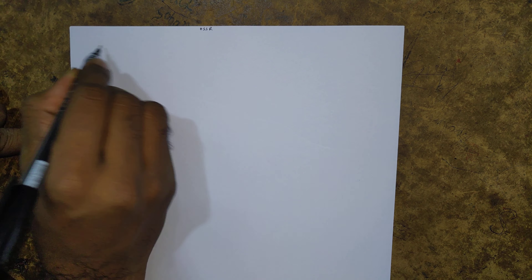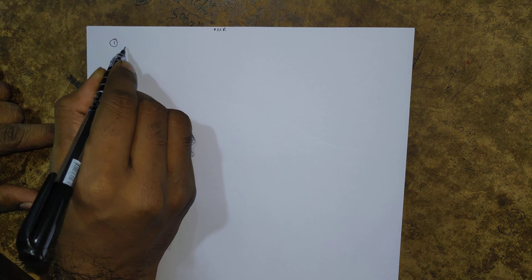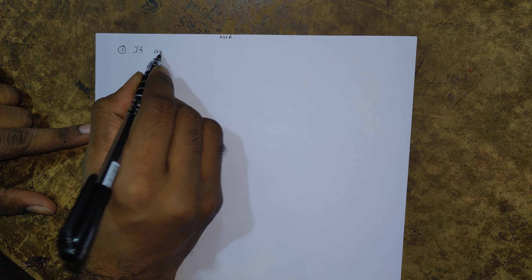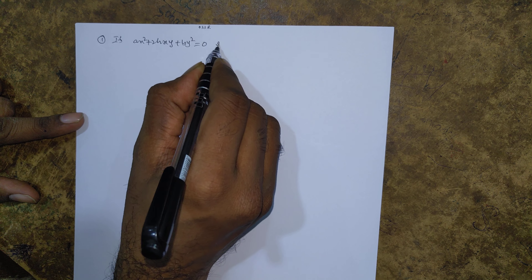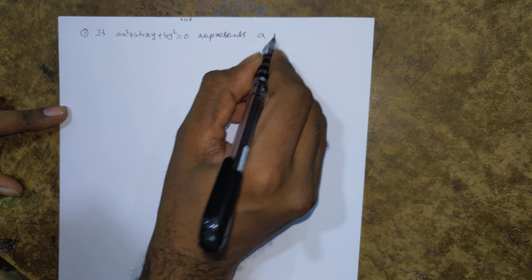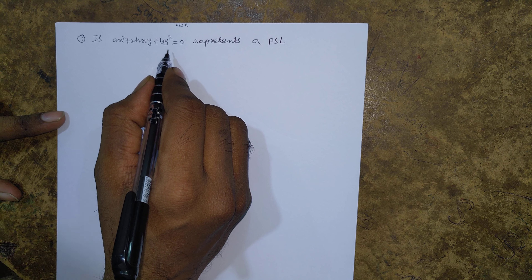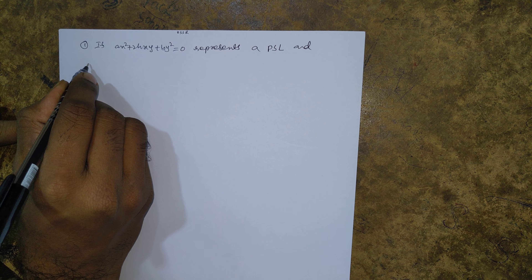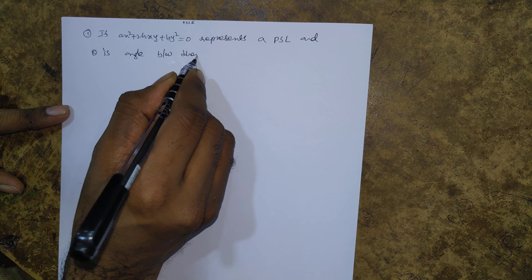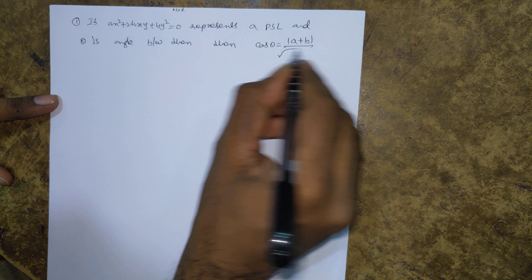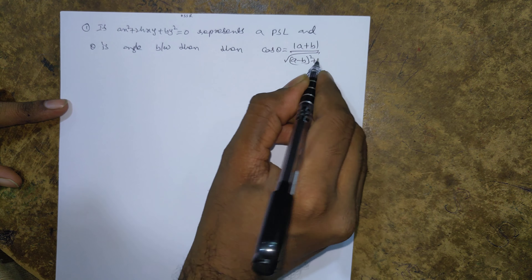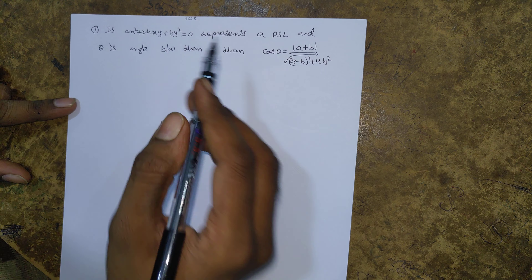Theorem Number 1 - Pair of Straight Lines. If ax² + 2hxy + by² = 0 represents a pair of straight lines (a homogeneous pair of straight lines) and theta is the angle between them, then cos θ = |a + b| / √((a - b)² + 4h²). This is the angle formula for the angle between a homogeneous pair of straight lines.